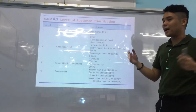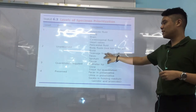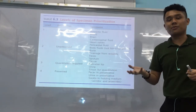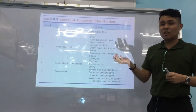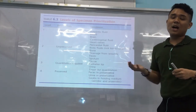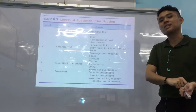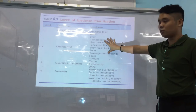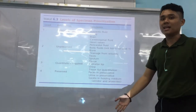The second priority level is unpreserved specimens — body fluids, bone, drainage, feces, sputum, and tissue. Because these are not preserved, the organisms could die if not processed promptly. We process them as soon as possible, but if both levels one and two arrive simultaneously, level one takes priority because it's life-threatening.